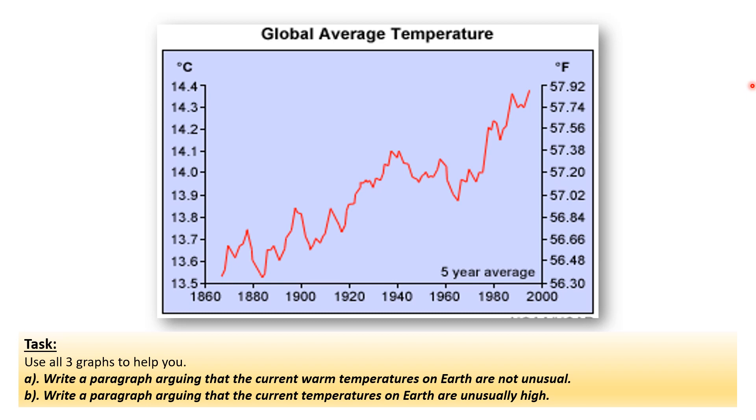Let's imagine we were going to do this one. Current warmer temperatures on Earth are not unusual. Yes, because we're in an interglacial and the fluctuation of temperatures means we'd expect it to be warmer. However, if we look at these temperatures, they are warmer than previous interglacials.